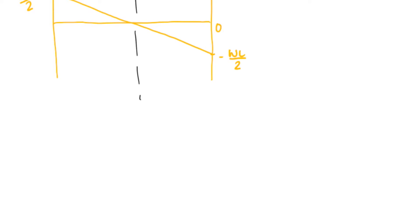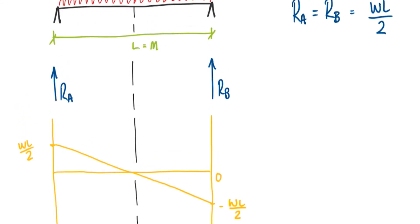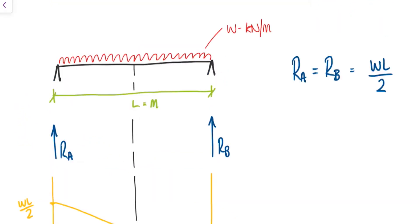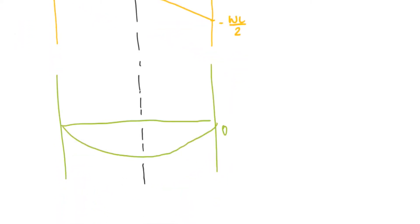So then, once you've got that, you can draw your bending moment diagram. Now we know for a UDL that a bending moment diagram is going to be a curve with a peak in the centre, because it is an evenly spread load. To find out the value of the bending moment at its peak, we can use the equation M equals WL squared over 8.